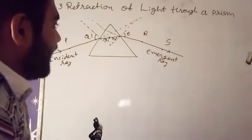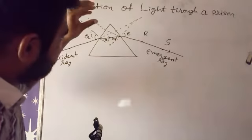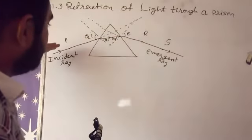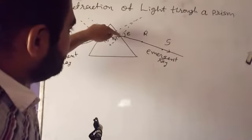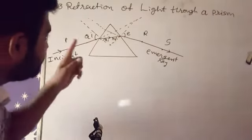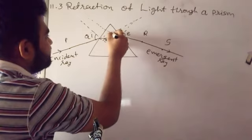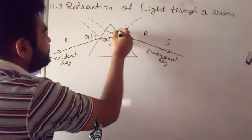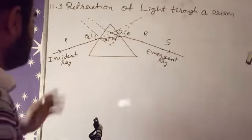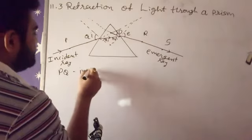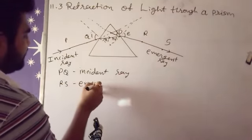Now, what is the angle of deviation? If there is no prism, the incident ray would continue further in the same direction. But because of the prism, the ray moves in a different direction. The angle between the original incident ray direction and the emergent ray is known as the angle of deviation. So PQ is the incident ray and RS is the emergent ray.